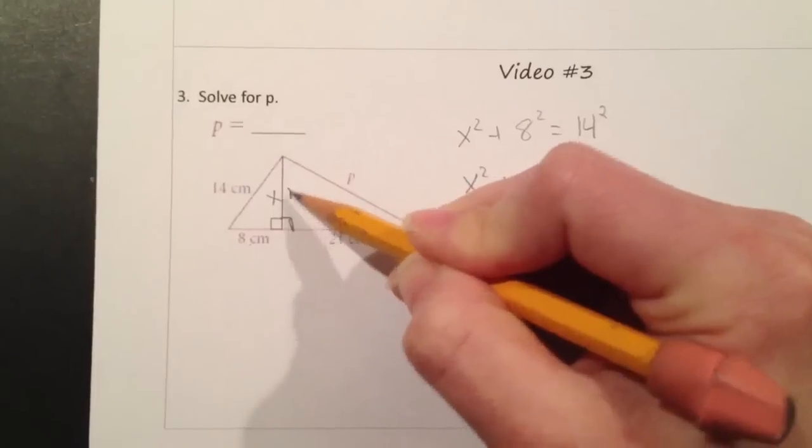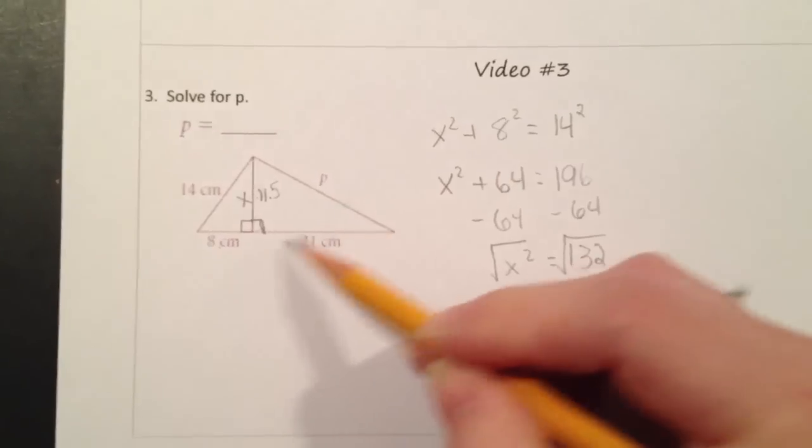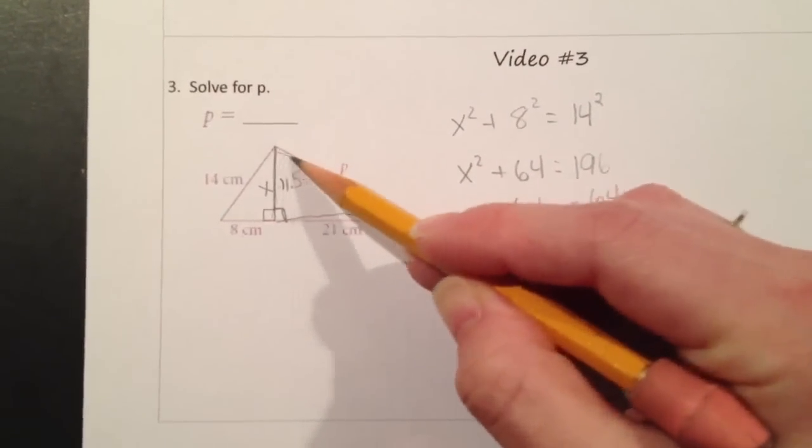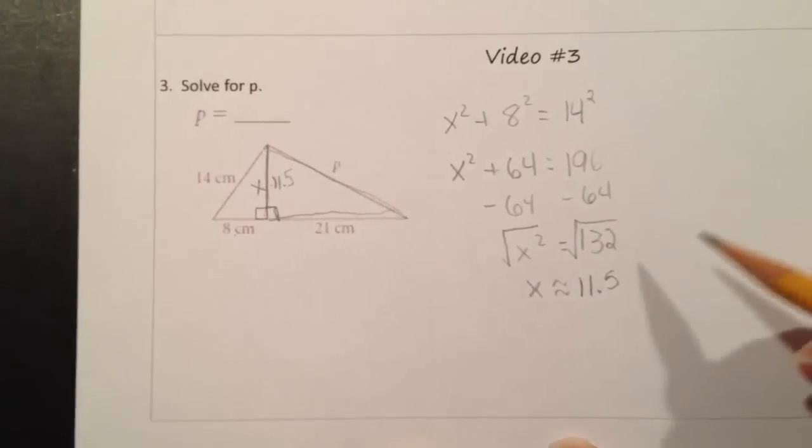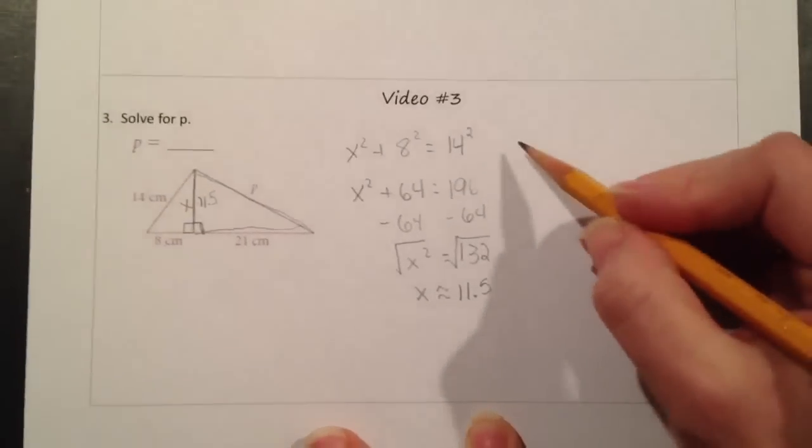Now we know this leg of the right triangle, and we also know the other leg of the right triangle. We're talking about the right triangle on the right here, with p as the hypotenuse. To solve this, it's just setting up the Pythagorean Theorem, using the Pythagorean Theorem again to set up another equation.